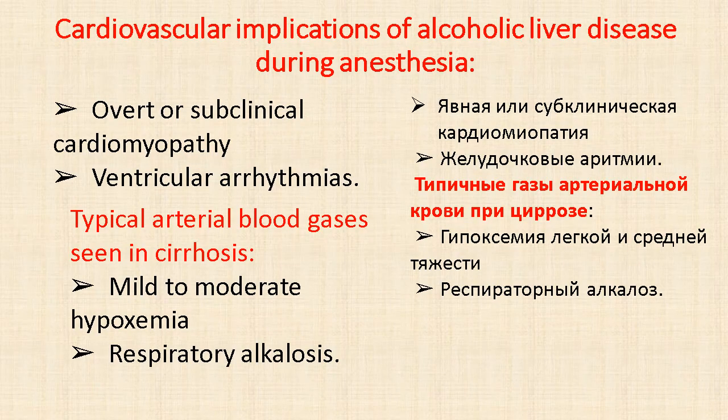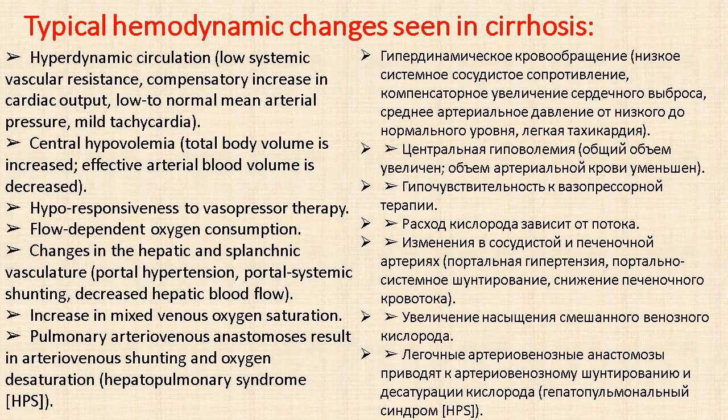Cardiovascular implications of alcoholic liver disease during anesthesia include overt or subclinical cardiomyopathy and ventricular arrhythmias. Typical arterial blood gas findings in cirrhosis include mild to moderate hypoxemia and respiratory alkalosis. Typical hemodynamic changes seen in cirrhosis include hyperdynamic circulation, low systemic vascular resistance, compensatory increase in cardiac output, low to normal arterial pressure, mild tachycardia, central hypovolemia with total body volume increased but effective arterial blood volume decreased, hyperresponsiveness to vasopressor therapy, flow-dependent oxygen consumption, portal hypertension, portosystemic shunting, decreased hepatic blood flow, increased mixed venous oxygen saturation, and pulmonary arteriovenous anastomoses resulting in arteriovenous shunting.